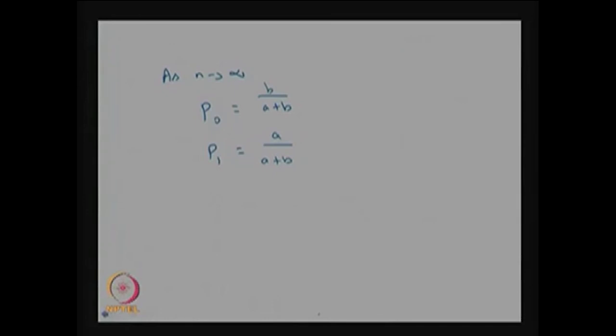The state transition diagram is useful for studying the long-run distribution — where the system will be as n tends to infinity. We now move to the next problem, Example 4.